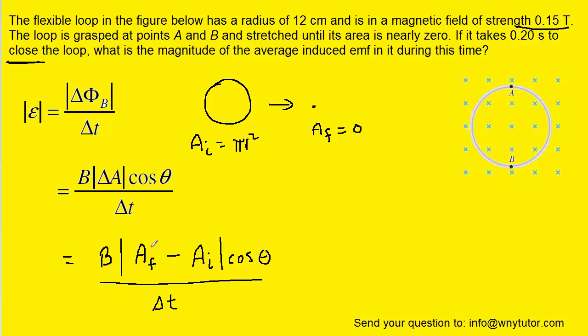Again, the final area is going to equal zero, so this is going to be eliminated. And then the initial area is pi r squared. And with this in mind, we're now ready to plug in the known values.